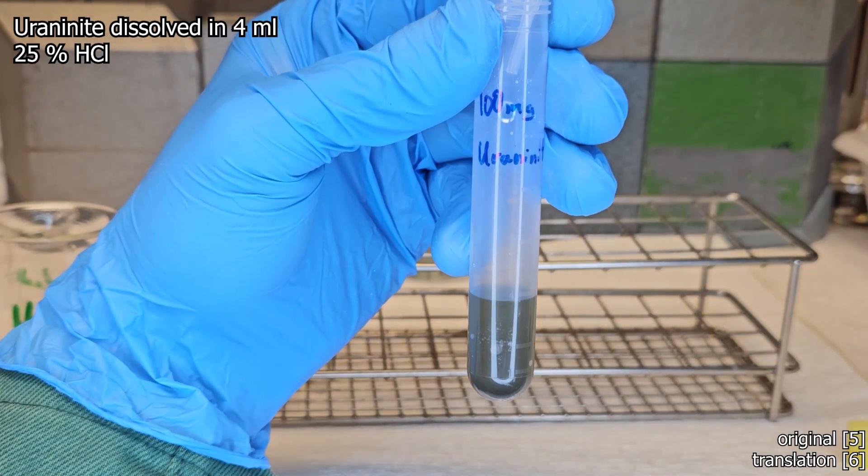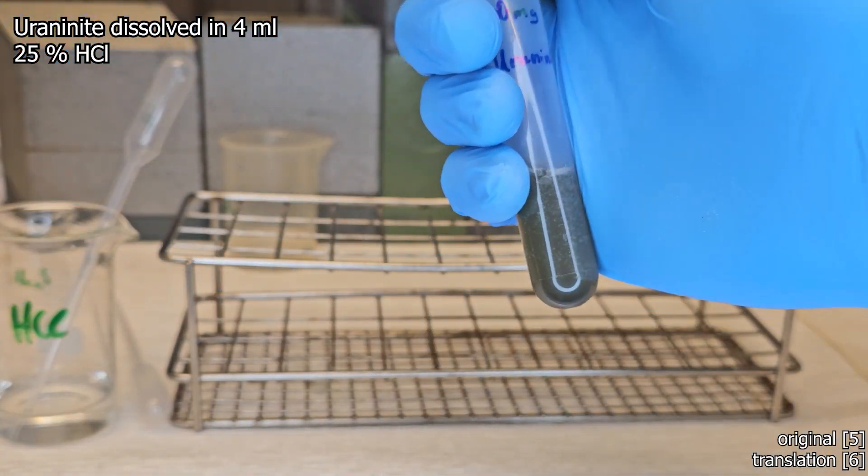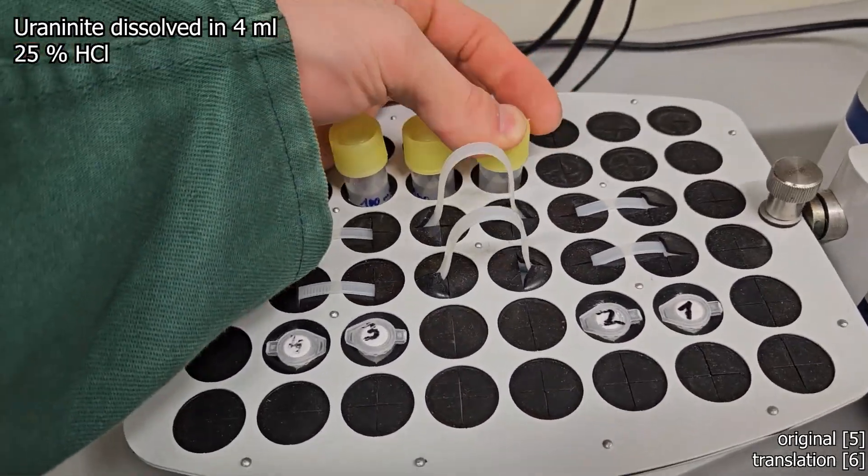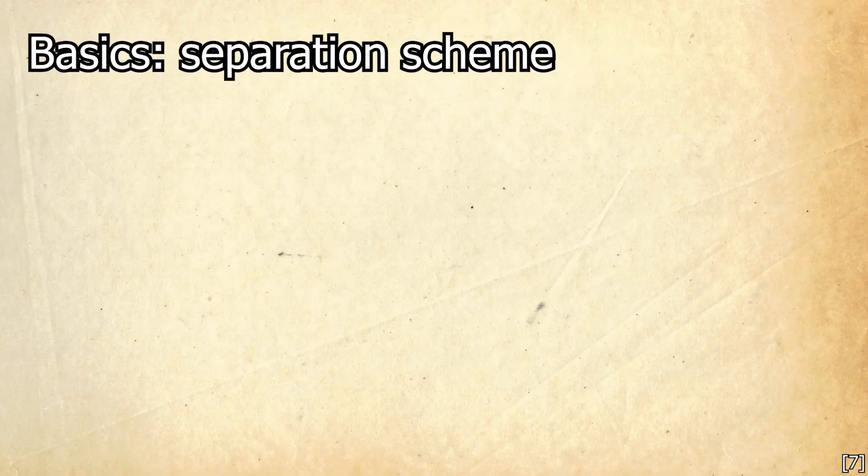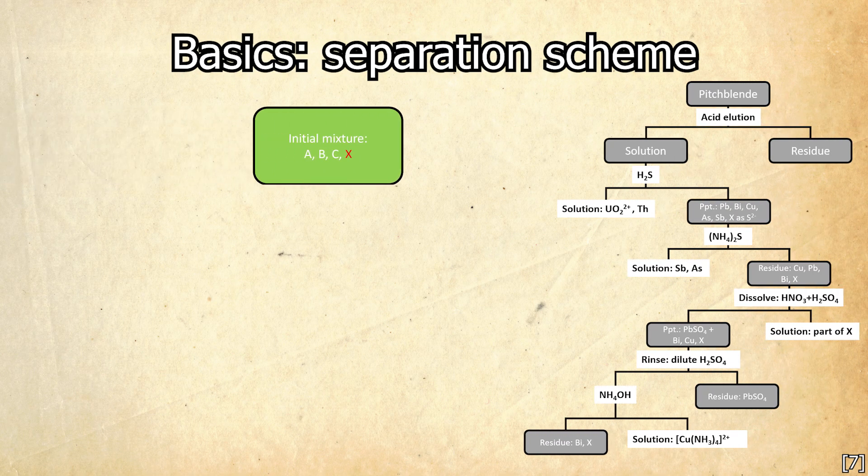We need 25% hydrochloric acid, which is added to 100 milligrams of pitchblende powder to ensure that everything soluble is actually dissolved. I added a few drops of concentrated nitric acid. The separation process I show is the classic Curie separation process for polonium.